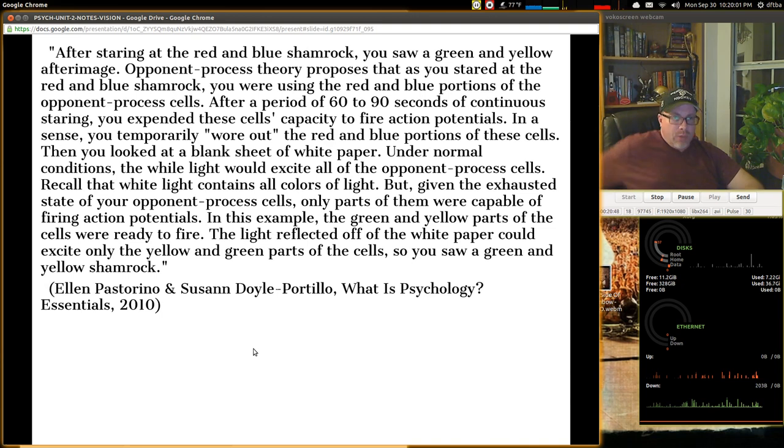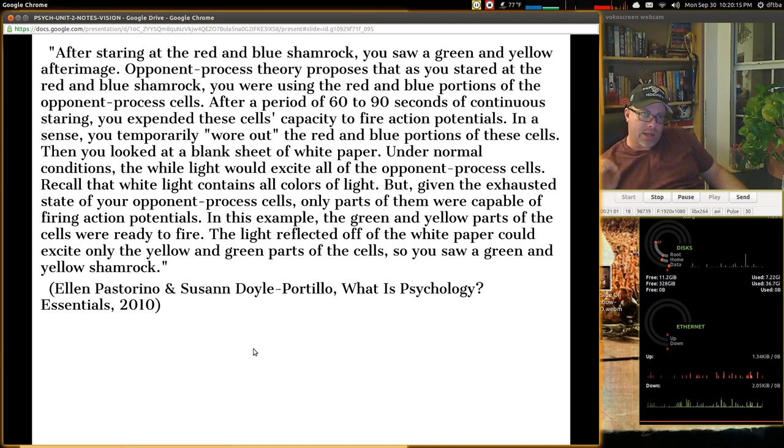After staring at the red-blue shamrock, okay, we're going to get to the shamrock here in a second, you saw a green and yellow after image. Opponent process theory proposes that you stared at the red-blue shamrock, you were using the red and blue portions of the opponent process cells. But after a period of 60 to 90 seconds of continuous staring, you expended these cells' capacity to fire action potentials. This is back to the neurons in the brain, like we talked about in the first part of this unit. In a sense, you temporarily wore it out in the red and blue portions of these cells, and then you looked at a blank white sheet of paper, and under normal conditions, the white light would excite the opponent process cells. So, recall that white light contains all the colors of light. But given the exhausted state of your opponent process cells, only part of them were able to be capable of firing action potentials. In this example, the green and yellow parts of the cells were ready to fire. The light reflected off the white paper could excite only the yellow and green parts of the cells, and so you saw a green and yellow shamrock. Let's try that one.